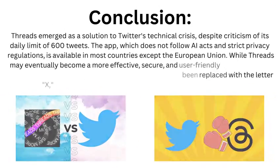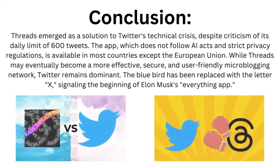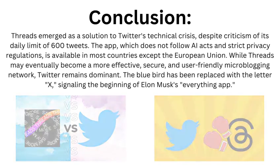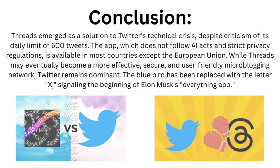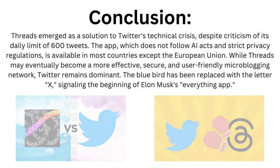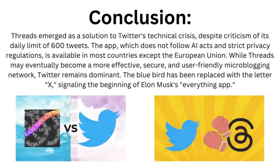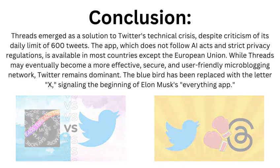Threads emerged as a solution to Twitter's technical crisis, despite criticism of its daily limit of 600 tweets. The app, which does not follow AI acts and strict privacy regulations, is available in most countries except the European Union. While Threads may eventually become a more effective, secure, and user-friendly microblogging network, Twitter remains dominant. The blue bird has been replaced with the letter X, signalling the beginning of Elon Musk's everything app.